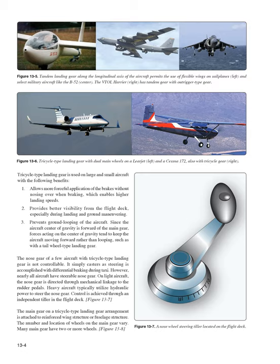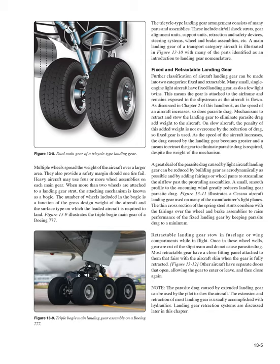The number and location of wheels on the main gear vary. Many main gear have two or more wheels. Multiple wheels spread the weight of the aircraft over a larger area and provide a safety margin should one tire fail. Heavy aircraft may use four or more wheel assemblies on each main gear. When more than two wheels are attached to a landing gear strut, the attaching mechanism is known as a bogey. The number of wheels in the bogey is a function of the gross design weight of the aircraft and the surface type on which the loaded aircraft is required to land. Figure 13-9 illustrates the triple bogey main gear of a Boeing 777.